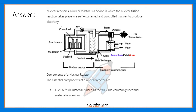The essential components of the nuclear reactor are as follows. The first one is fuel. Fuel is a fissile material — fissile means a substance that is capable of undergoing a fission reaction. The commonly used fuel material is uranium, a radioactive element used in the nuclear reactor for the production of electricity.